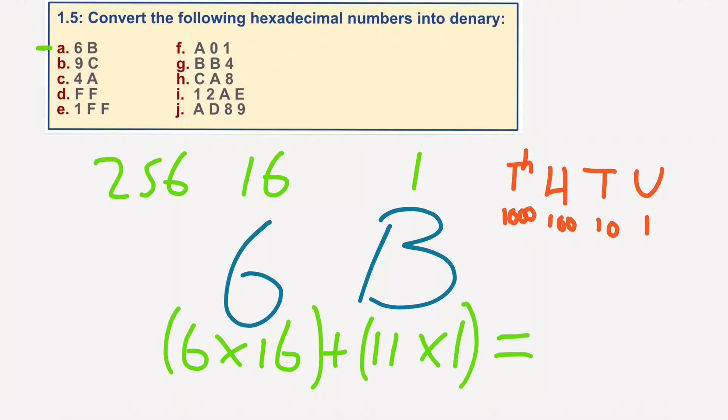So 6 times 16 would equal 96, I believe. 11 times 1 would be 11. So our answer would be 107 in base 10. So that's how we do the first one. Nice and easy.